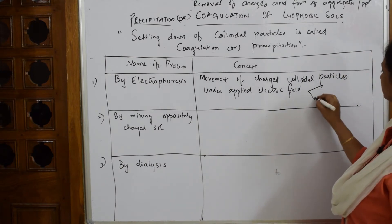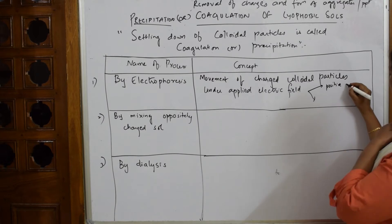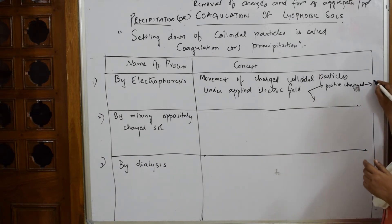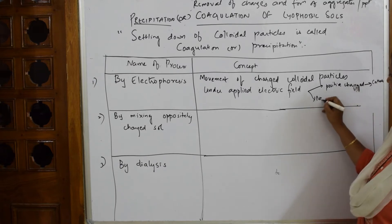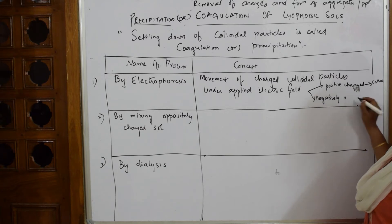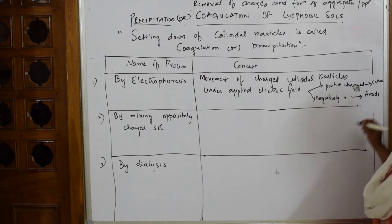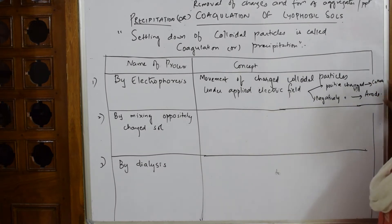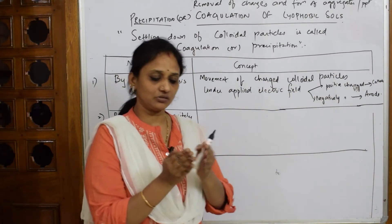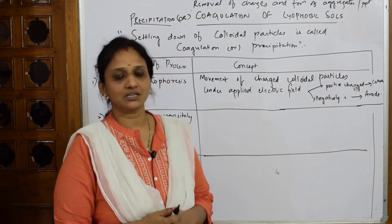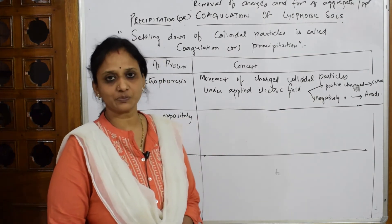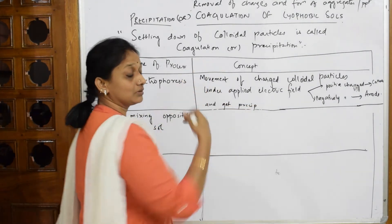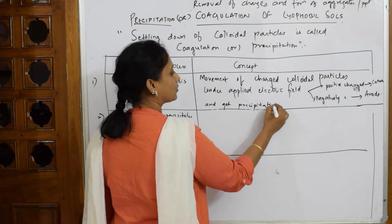A positively charged colloid goes to the cathode, and a negatively charged colloid goes to the anode. Once they go to the respective electrodes, all the aggregates come together and they finally get precipitated there. So we are precipitating or coagulating by moving colloidal particles to their respective electrodes where they get precipitated.